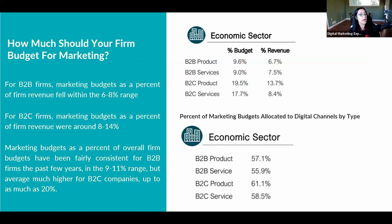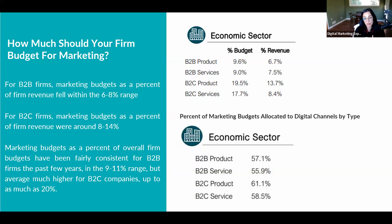How much should a firm budget for marketing? There are two different types of firms. For business-to-business, anywhere between 6% to 8% of revenue should go toward marketing. For business-to-consumer, you need to increase that to 8% to 14% because the range of competitors is a lot more. Marketing budgets as a percent of overall firm budget have been fairly consistent for B2B firms in the 9% to 11% range, but average much higher for B2C — up to 20%.